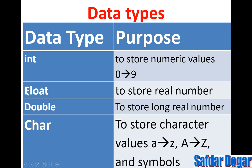So viewers, these four data types — integer, float, double, and character — are built-in data types, meaning predefined data types in C++.